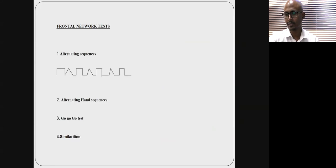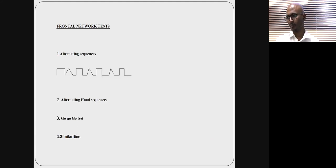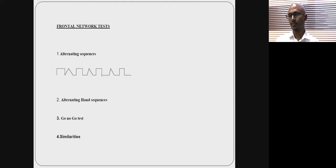Executive function refers to all cognitive components that constitute goal-directed behavior. There has to be an intention, a goal, the goal is broken into sub-goals called sets, you sequence through them, shift from one set to the other as you reach the goal, monitor for errors, and stop when complete. This involves memory, attention, vigilance, and depending on the task, praxis as well. Therefore, frontal assessments are done only after testing all other domains.